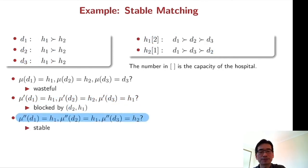Let's consider this matching: D1 H1 and D2 H1 and D3 H2. So this matching is stable because any blocking pair must include D3 and D3 cannot block this matching. So this is stable.